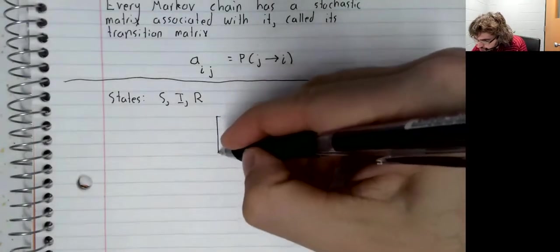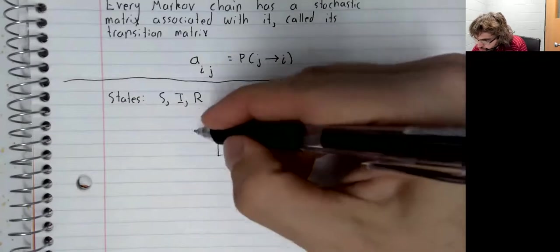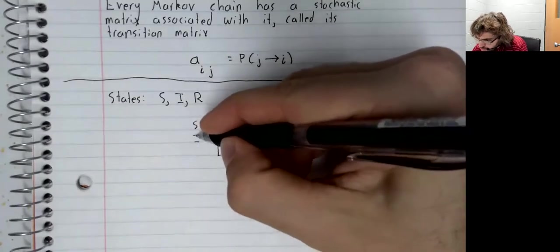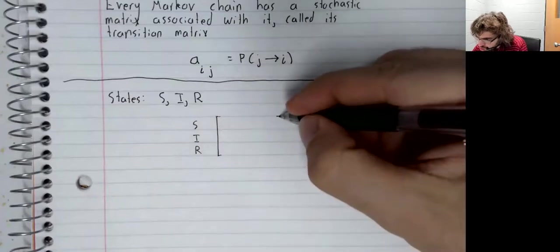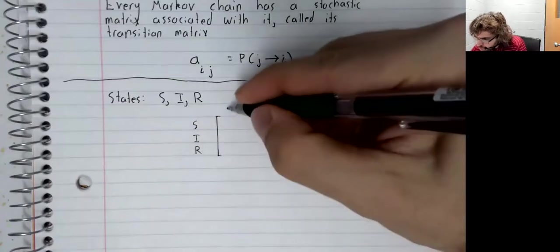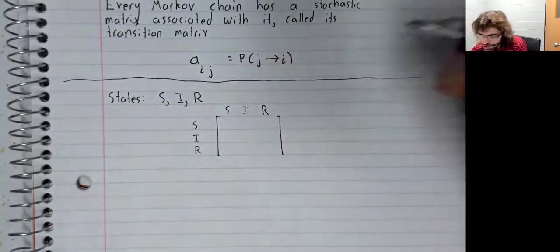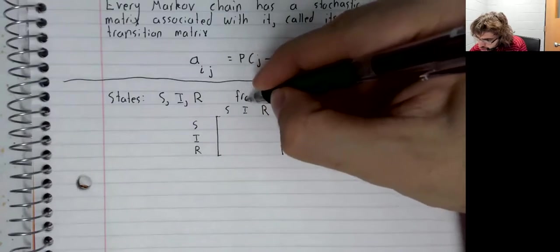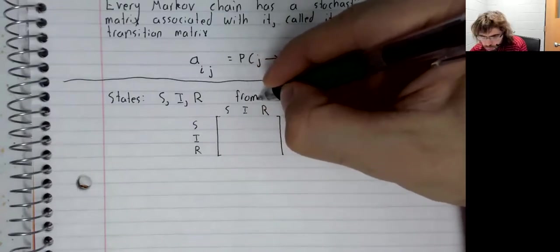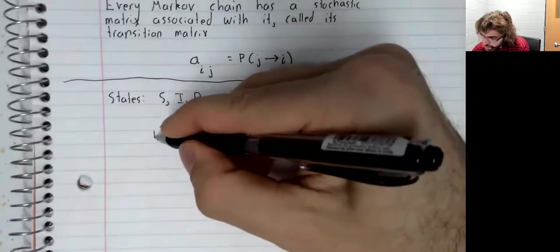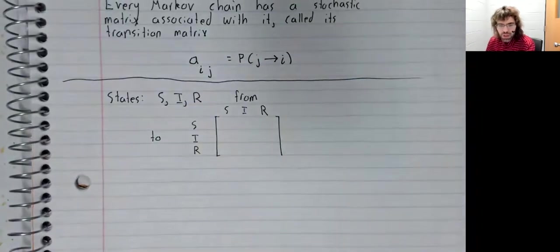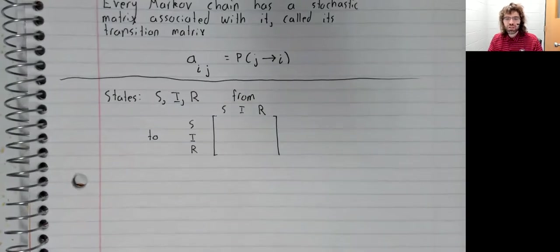It's going to be one row for each state and one column for each state. We're looking at the probabilities of going from state to state. The columns represent the from part, the rows represent the to part.